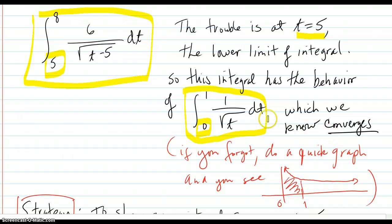We know this integral converges because the p value, t to the 1/2, the p equaling 1/2, is less than 1. And when your integral goes from 0 to 1, that integral converges.